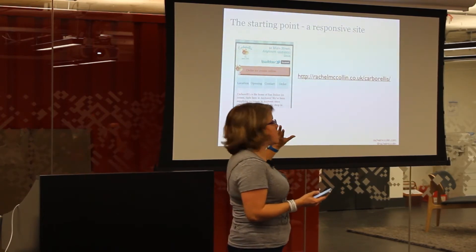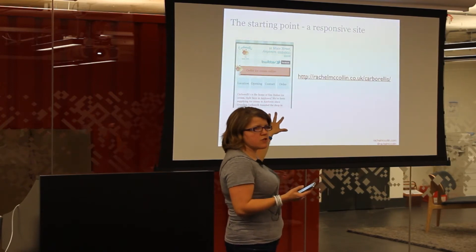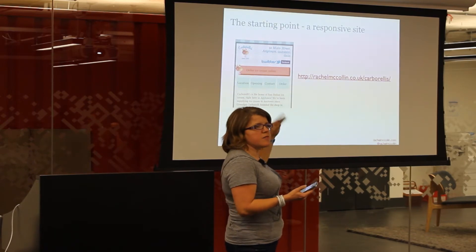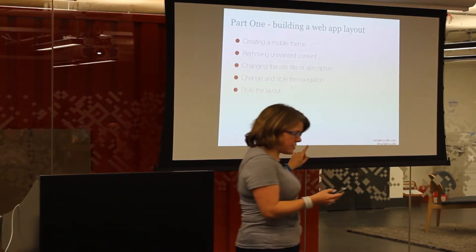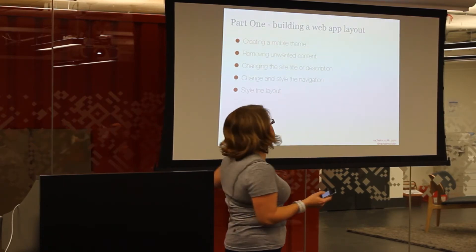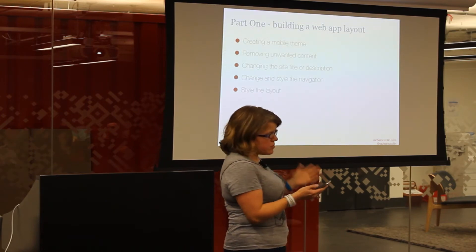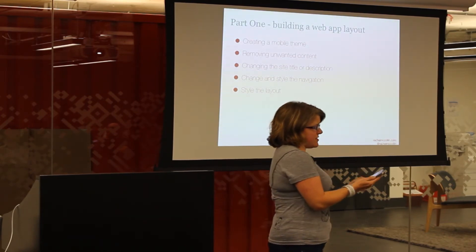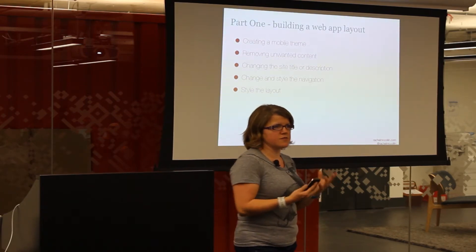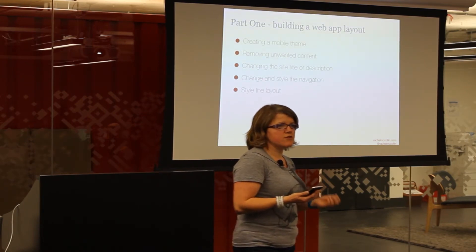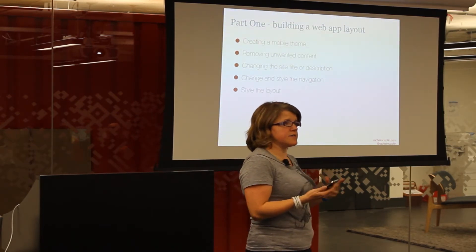That's the responsive site as it is — it's got a different layout from the desktop site. The call to action is bigger and easy to tap. There's a top menu with only four links, nice and easy to tap, and the main menu from the desktop site is down in the footer. So that's our starting point. I'm going to take you through how I built the layout for this web app: creating a mobile theme based on the responsive theme, removing any unwanted content, changing the site title — because I don't want 'Carborelli's', I want 'Ice Cream Sundae Builder', since that's what the web app does — changing and styling the navigation so it looks more app-like with buttons, and then adding web app functionality.